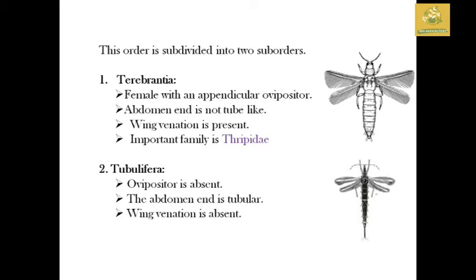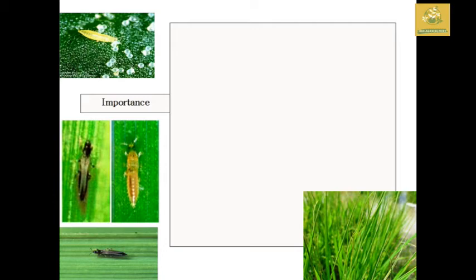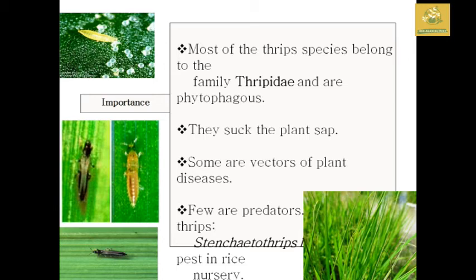In Terebrantia, the ovipositor is not tube-like but saw-like with wing venation present. An important family in Terebrantia is Thripidae. If you look at the life cycle and body characters, most pest insects belong to the Thripidae family. They are phytophagous insects that eat plant sap.